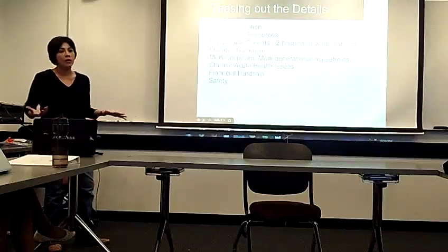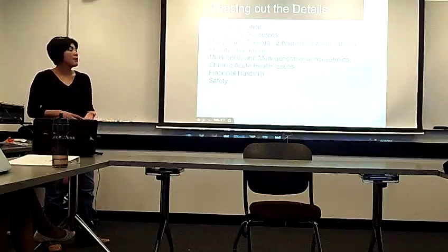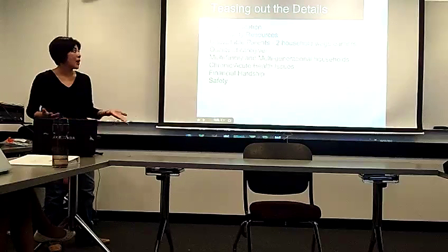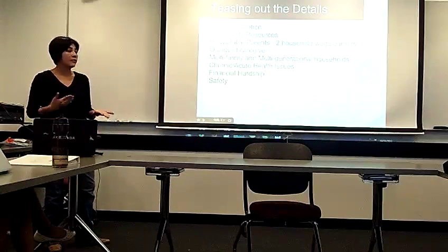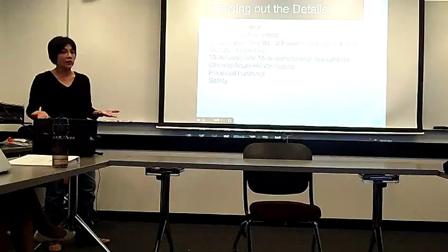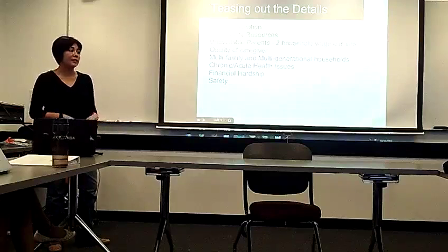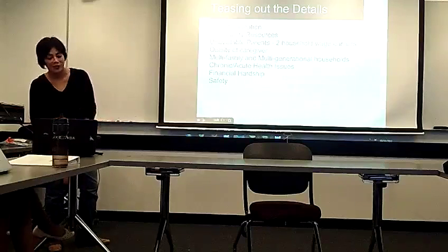I'm trying to tease out what those differences are. Are they based on parent education, community resources, unavailable parents, two household wage earners, the quality of care received prior to school, multi-family or multi-generational households, acute health issues for parents or family members, financial hardship, or safety issues? Those are all things I want to tease out in my project. Thank you.